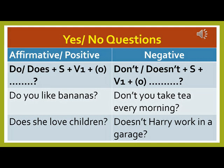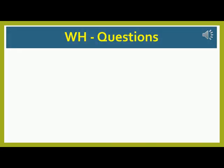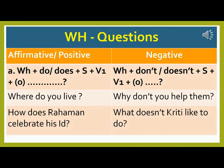Second negative example: 'They do not go to picnic every week.' Now it has its own yes-no question — affirmative and negative. Affirmative yes-no question structure: Do or does + Subject + V1 + sometimes object. Example: 'Do you like bananas?' Another example: 'Does she love children?' Negative yes-no question: Don't or doesn't + Subject + V1 + sometimes object. Example: 'Don't you take tea every morning?' Another example: 'Doesn't Harry work in a garage?'